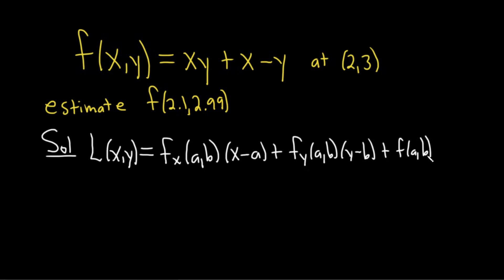In this problem, our a is equal to 2 and our b is equal to 3. Let's do some quick math to find the partials. So fx is the partial with respect to x. When computing this, we treat all other variables as constants. The y is a constant, so the derivative of x is 1 and we're left with the y. Then the derivative of x is 1, and the derivative of y is 0.